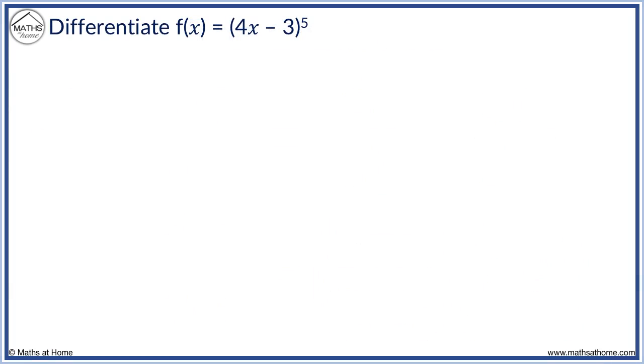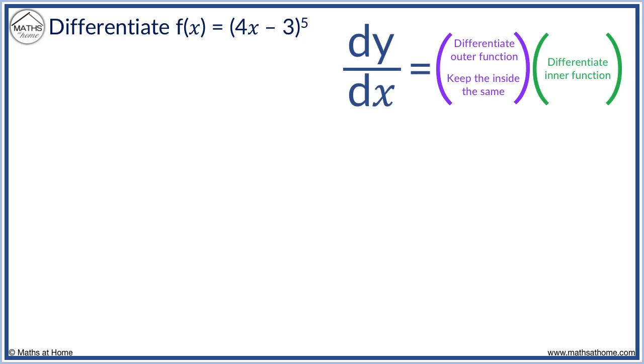Let's practice this with an example. Differentiate (4x - 3)^5. The function needs to be considered as an inner function and an outer function. The inner function is 4x minus 3 and the outer function is raising 4x minus 3 to the power of 5.